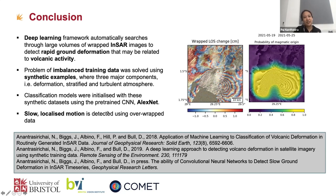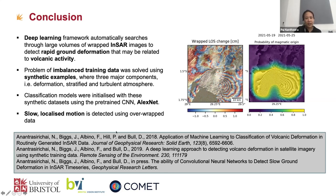We use synthetic samples because of the imbalanced dataset — we have many negative samples but not many positive ones. We use AlexNet to classify, and we propose the rewrapping technique to detect slow and low-magnitude ground motion in the interferograms. There is a list of publications to check if you want more details. Thank you.